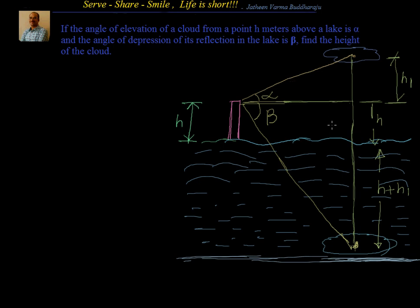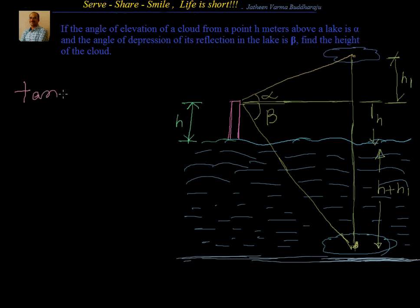The key point to understand is that the vertical distance between the lake and the cloud equals the vertical distance between the lake and the reflection. Now we have two triangles. For the first triangle, tan alpha equals h1 divided by x, where x is the horizontal distance.